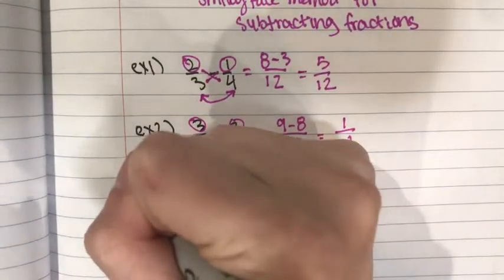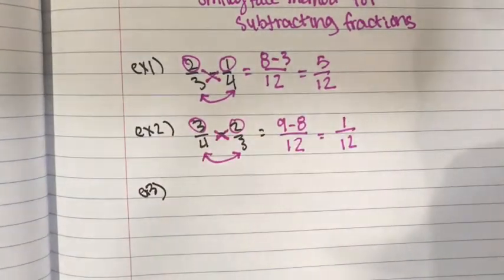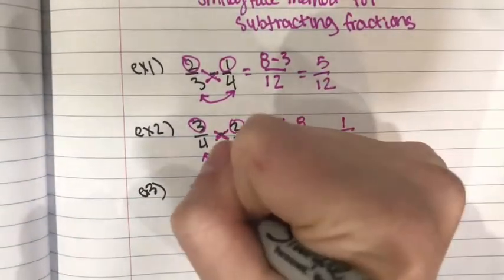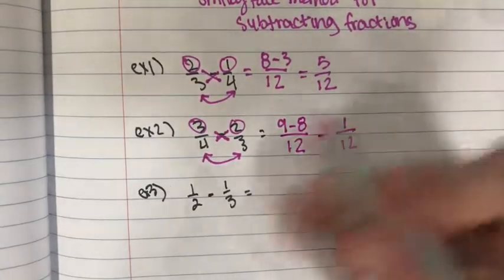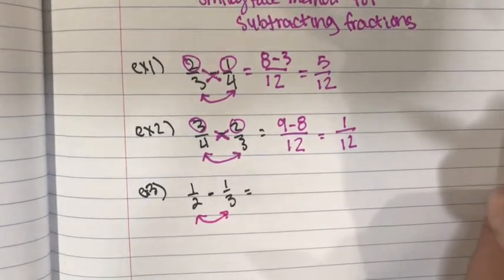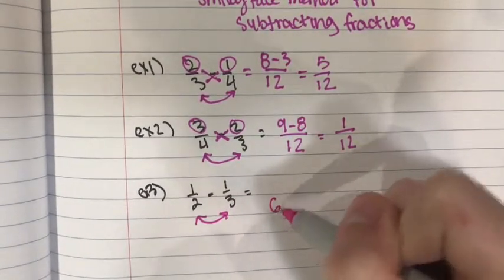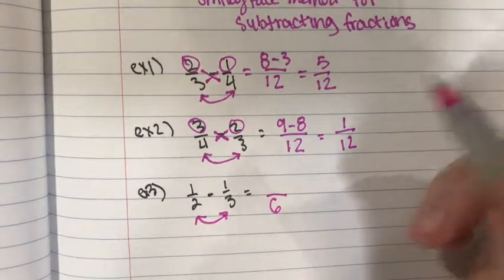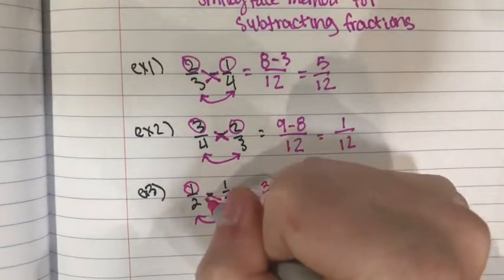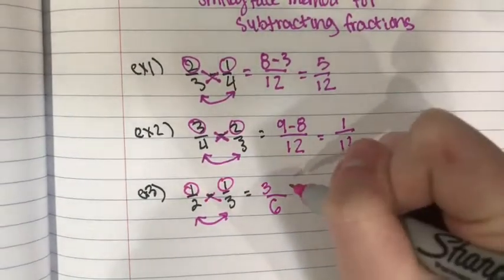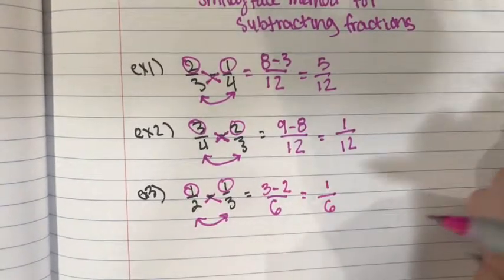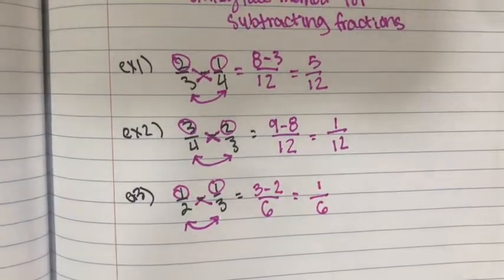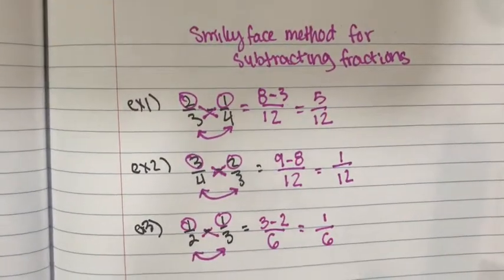The last example is 1/2 minus 1/3. You multiply your denominators together, so 2 times 3 equals 6. Then multiply 3 times 1, giving you 3, and 1 times 2, giving you 2. Subtract them: 3 minus 2 equals 1. Bring over 6, giving you 1/6. So that's the smiley face method for subtraction.